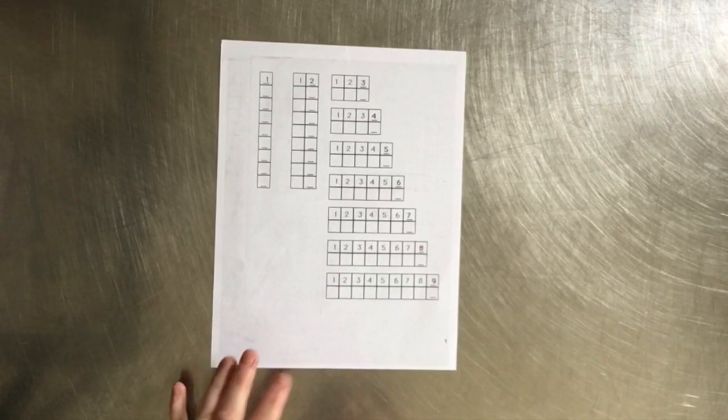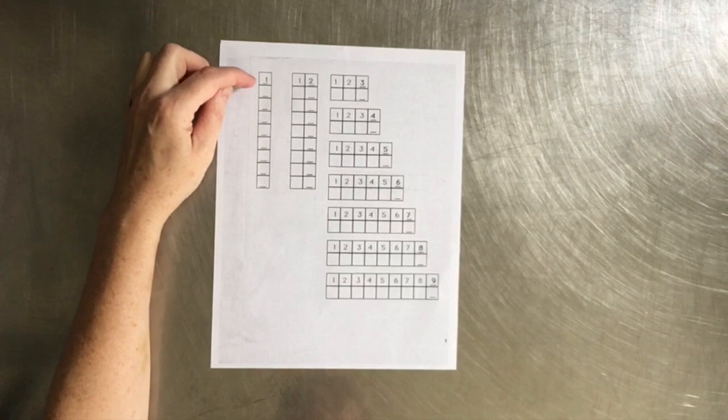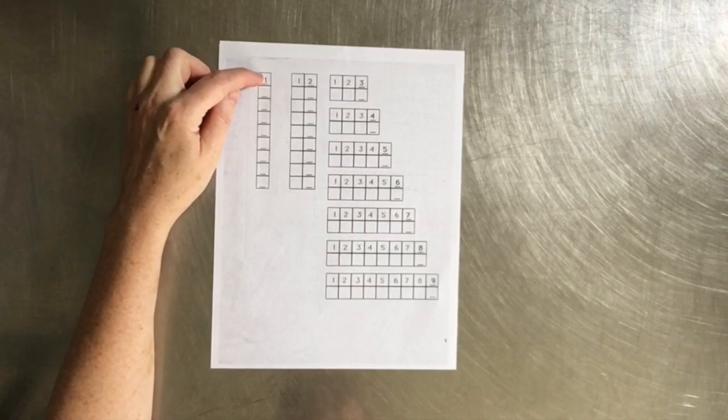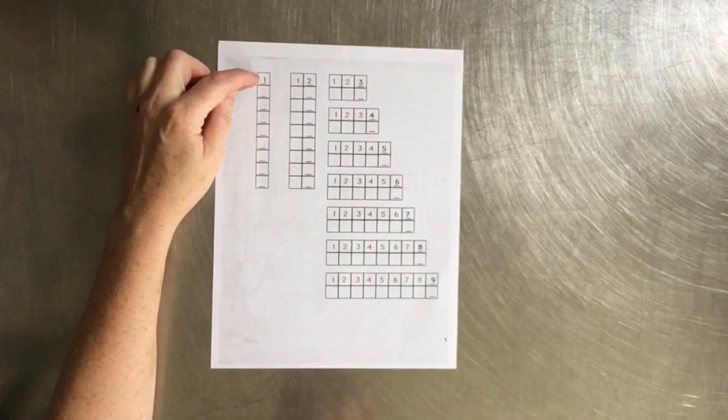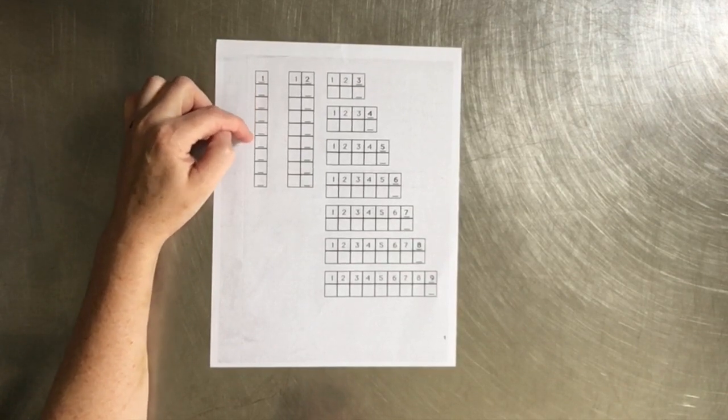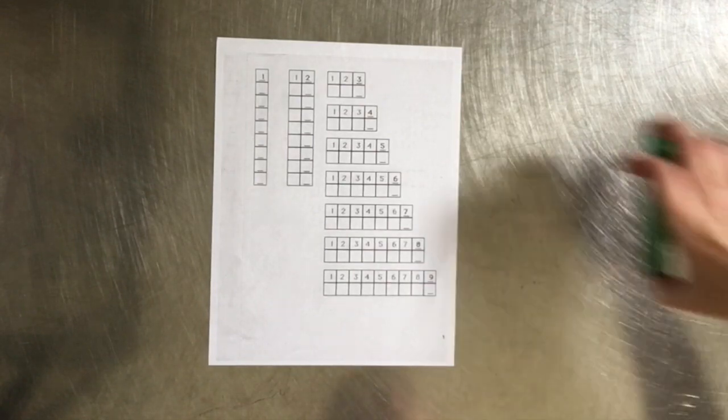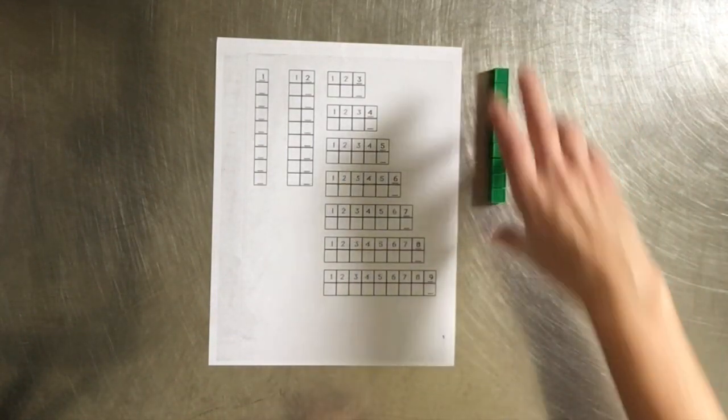The first thing that I would get the child to do is build the model. Now they may need to actually count out how many blocks are in each model. In this case we are counting ones. And there is 1, 2, 3, 4, 5, 6, 7, 8, 9. And so they can build the model. Now I have already got my model built so I am just going to pull it out.